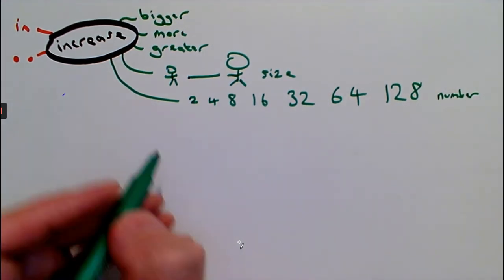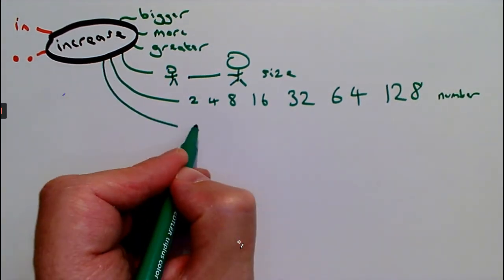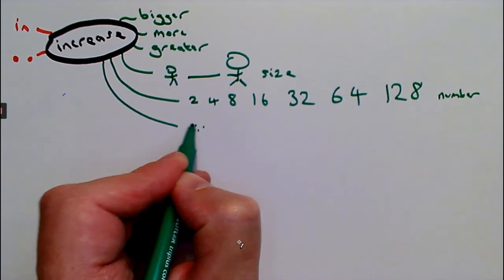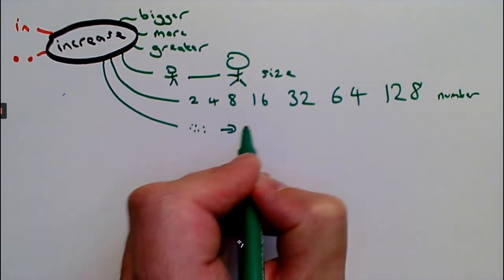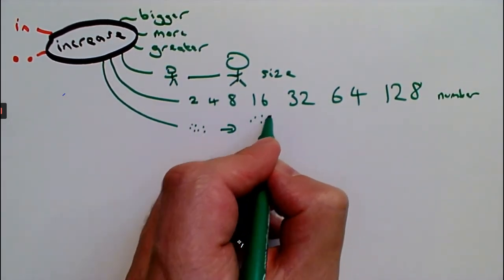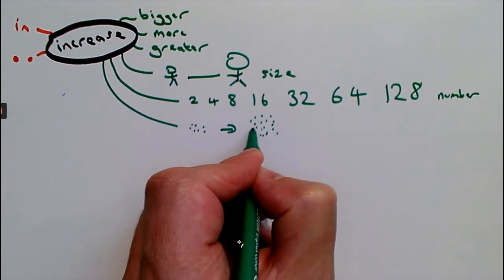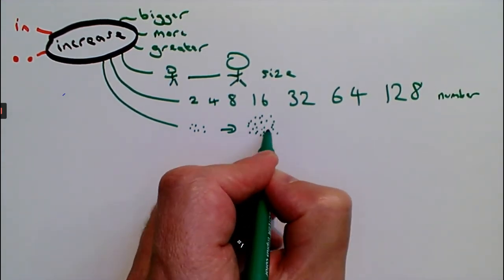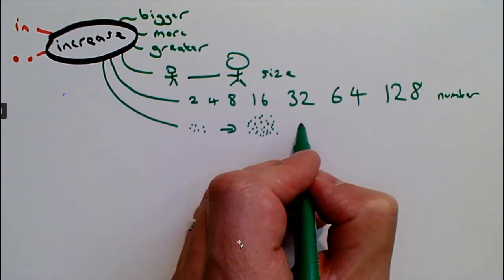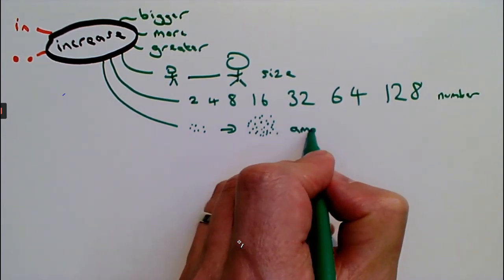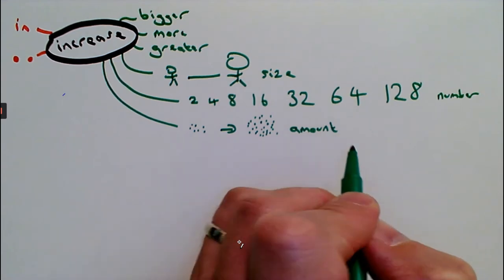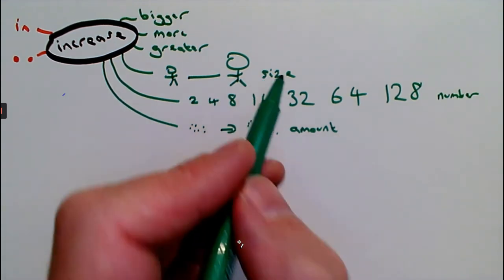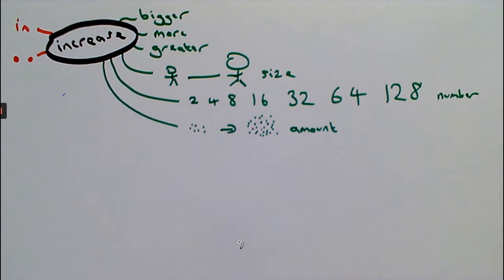And it might be an increase in the amount of something. Maybe you have a small amount, and it increases to be a bigger amount. An increase in the amount of something. So we can have increases in size, increases in number, increases in amount.